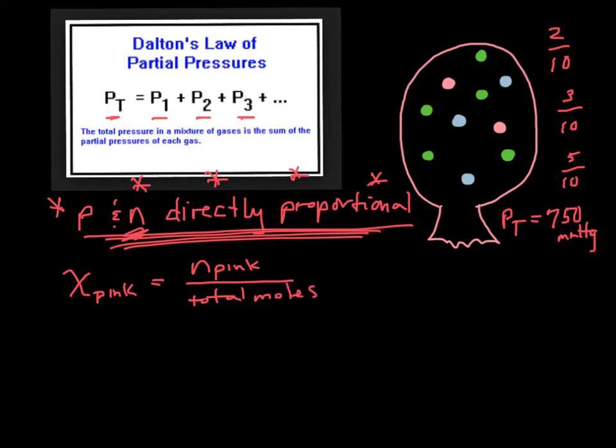So to find the partial pressure of this pink gas, it's equal to the total pressure, which I gave us, 750, times its mole fraction, which we decided was two-tenths. So the partial pressure of this pink gas is 150 millimeters of mercury.